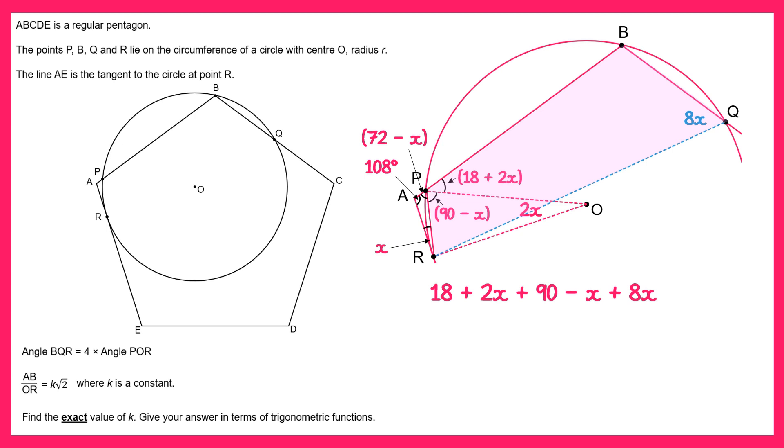So we end up with 18 plus 2x plus 90 minus x plus 8x equals 180. If we collect like terms this becomes 9x plus 108 equals 180. Subtract 108 from both sides and you get 9x equals 72, and then divide both sides by 9 we find that x equals 8 degrees.